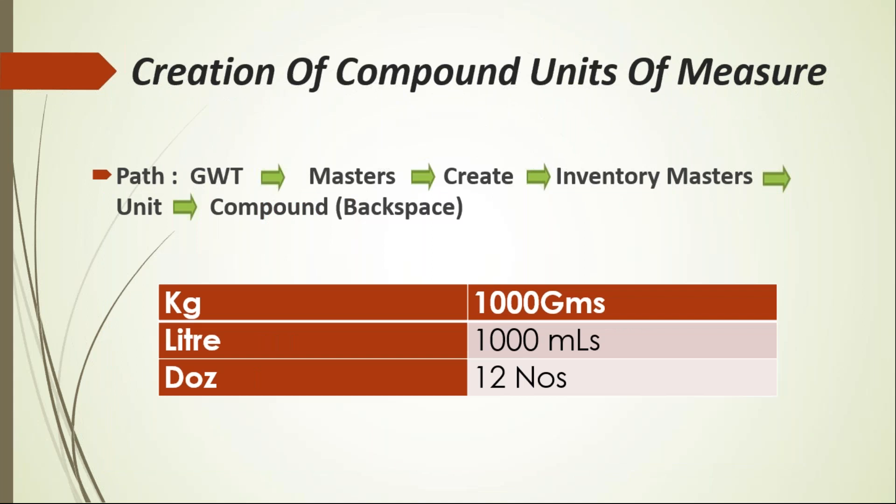When we are using more than one unit of measure, it becomes a compound unit of measure. For example, 1 kg equals 1000 grams, 1 liter equals 1000 milliliters, 1 dozen equals 12 numbers. To create compound units, use the same path under Inventory Masters — Unit. But by default it shows simple, so you must press Backspace to switch from simple to compound. Once you press Backspace, you get the option to choose compound unit of measure.